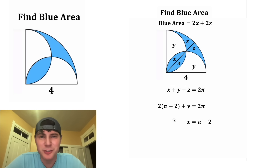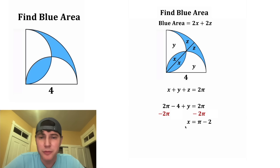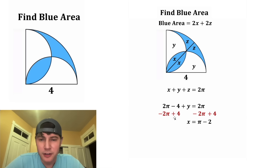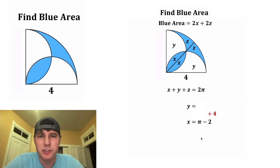In the place of this x we can plug in pi minus 2. This 2 is going to distribute to both of these, so it becomes 2 pi minus 4. Next, let's subtract 2 pi from both sides and add 4 to both sides. On the left-hand side these 2 pi's cancel each other out, these 4s cancel each other out. On the right-hand side these 2 pi's cancel each other out. So we have y is equal to 4.